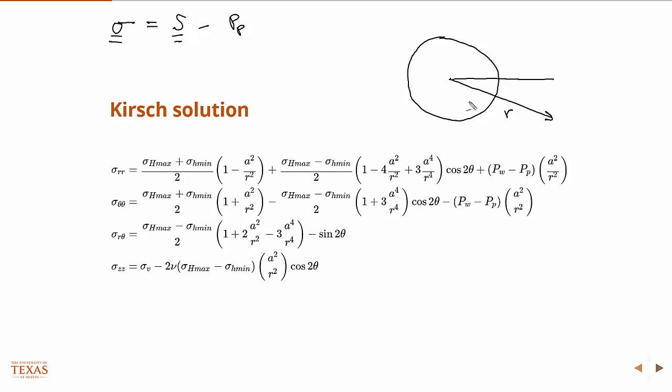So obviously these are components of the stress tensor in polar coordinates where R is the radial distance. Actually, let me draw it like this. So R is the radial distance from the center of the circle or wellbore to some point that you want to compute the stress at. But this is the angle theta. So right-hand positive measured from the horizontal. And A is the radius of the wellbore.